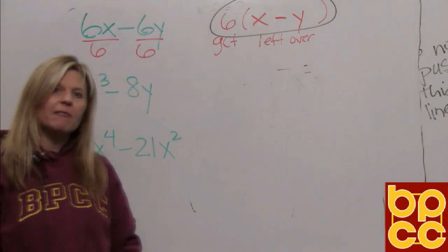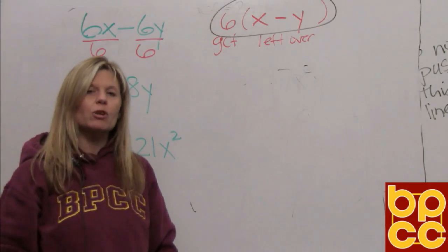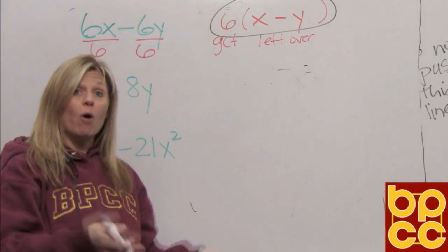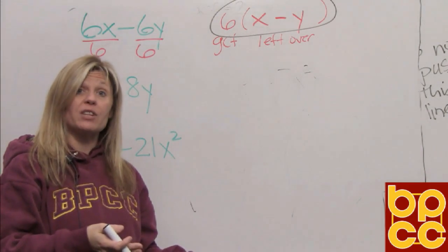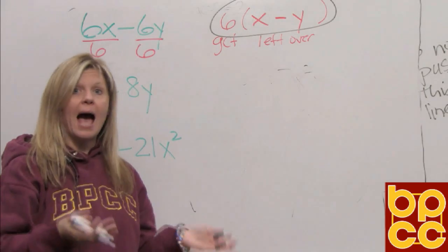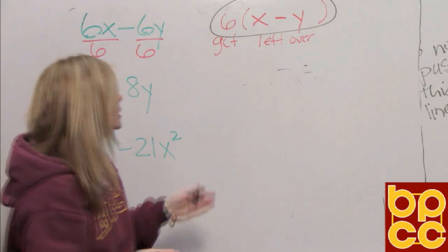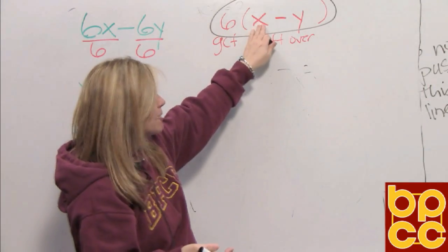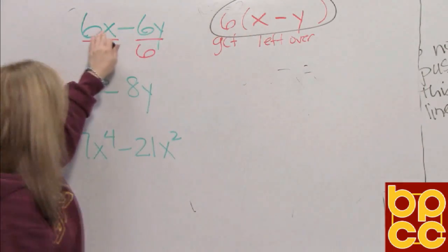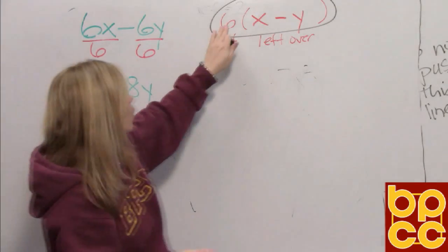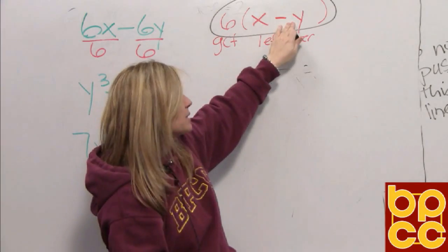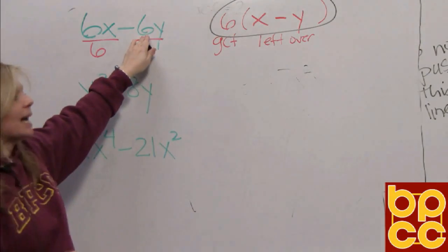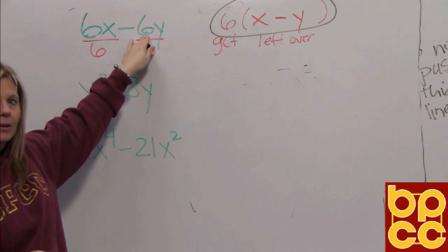What I love about factoring is you can always check to see if you did it right, because we've already learned in the previous modules how to multiply. So let's use our distributive property. What's 6 times x? 6x — got it. What's 6 times negative y? Negative 6y — got it.